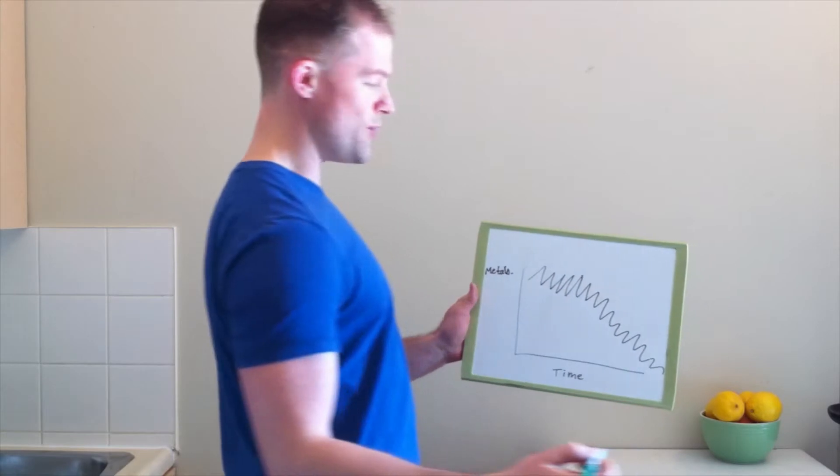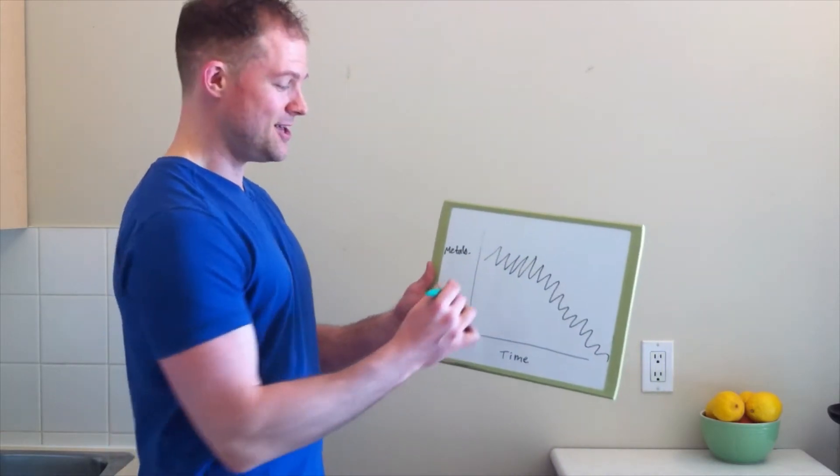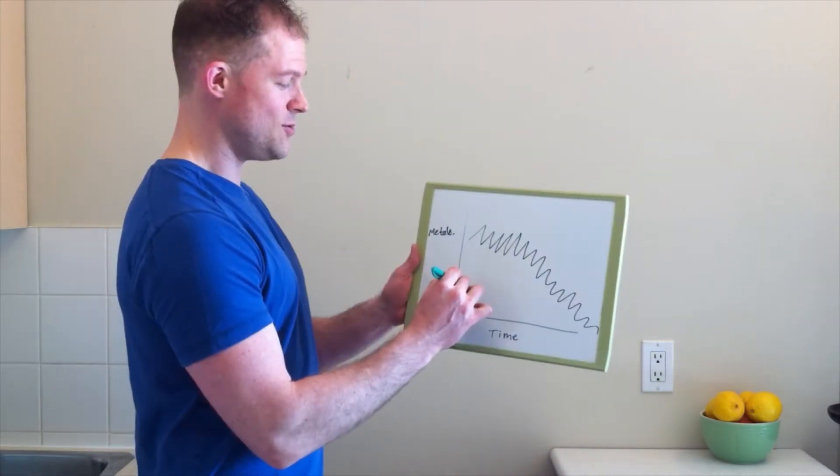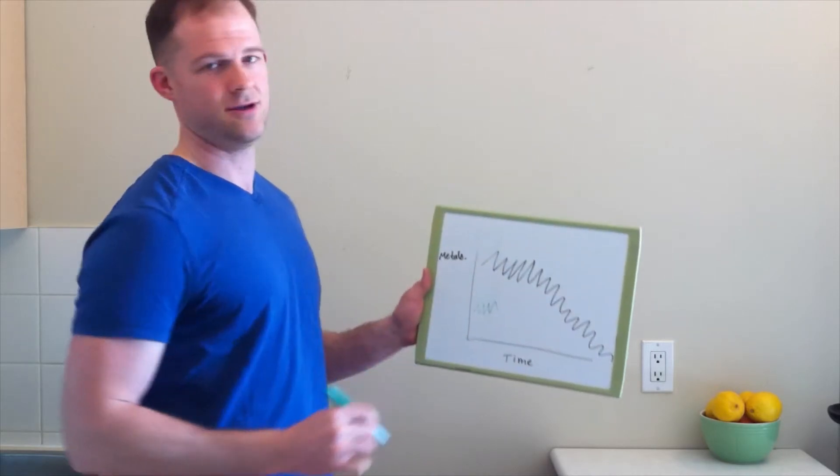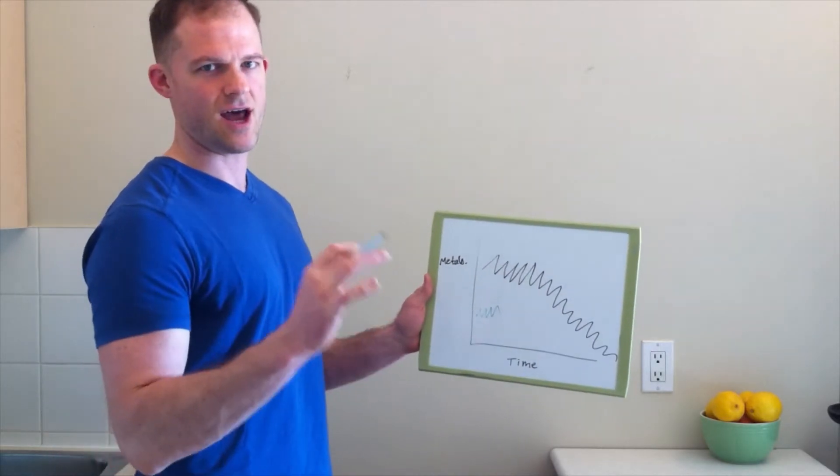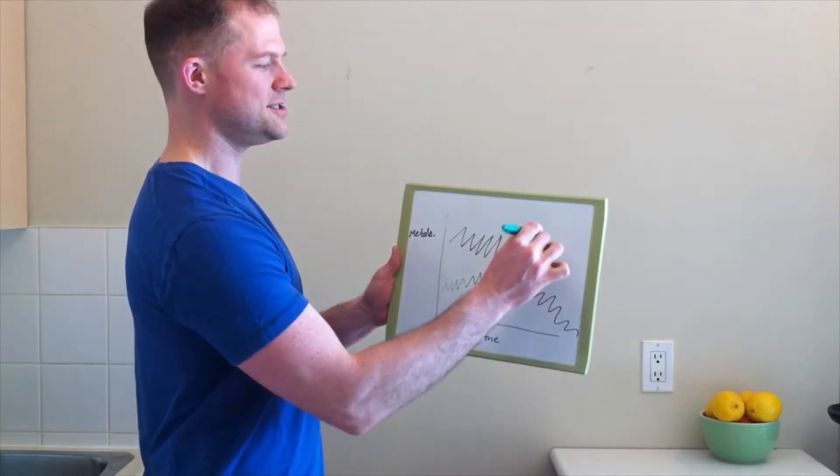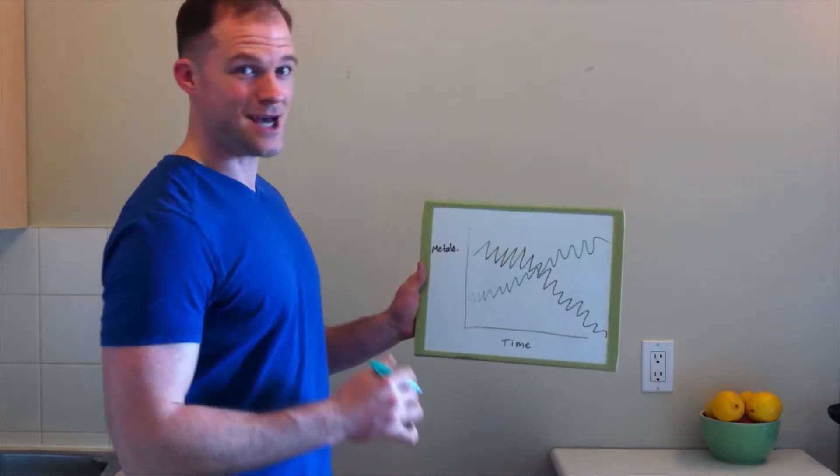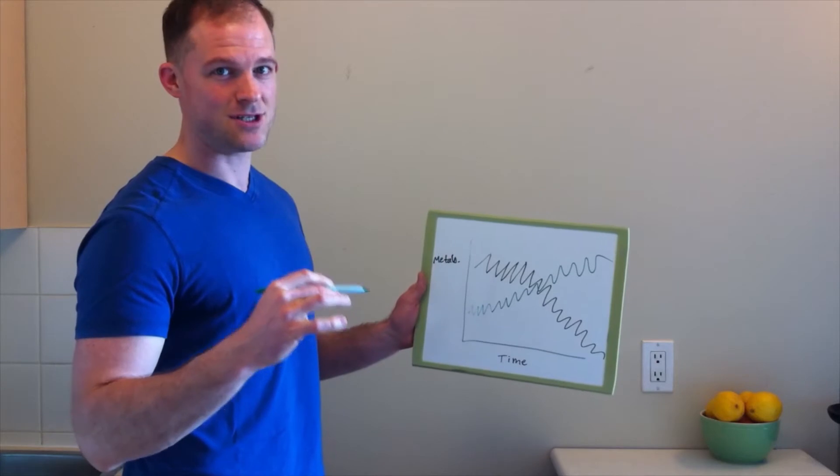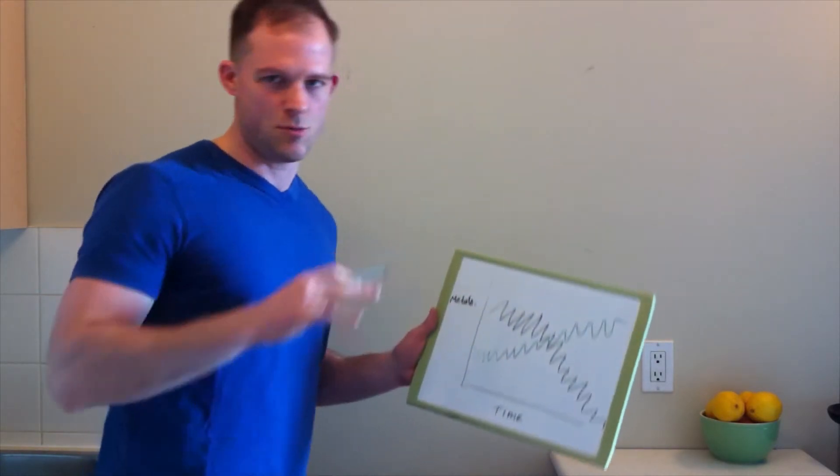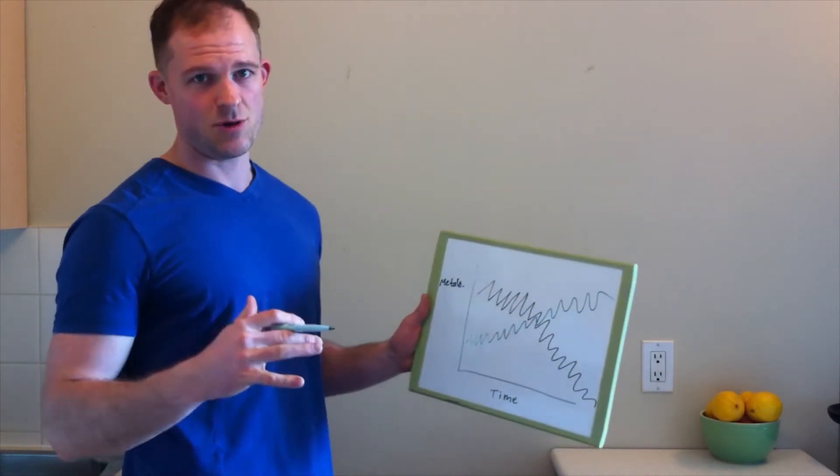Now let's say you get into lifting weights. A weight lifting session might give you a smaller spike initially, like for that half hour or hour that you're doing it. But then over time, your metabolism is higher. Your baseline metabolism is higher. So when you're sleeping at night, you're burning more fat. When you're sitting at your desk, you're burning more fat.